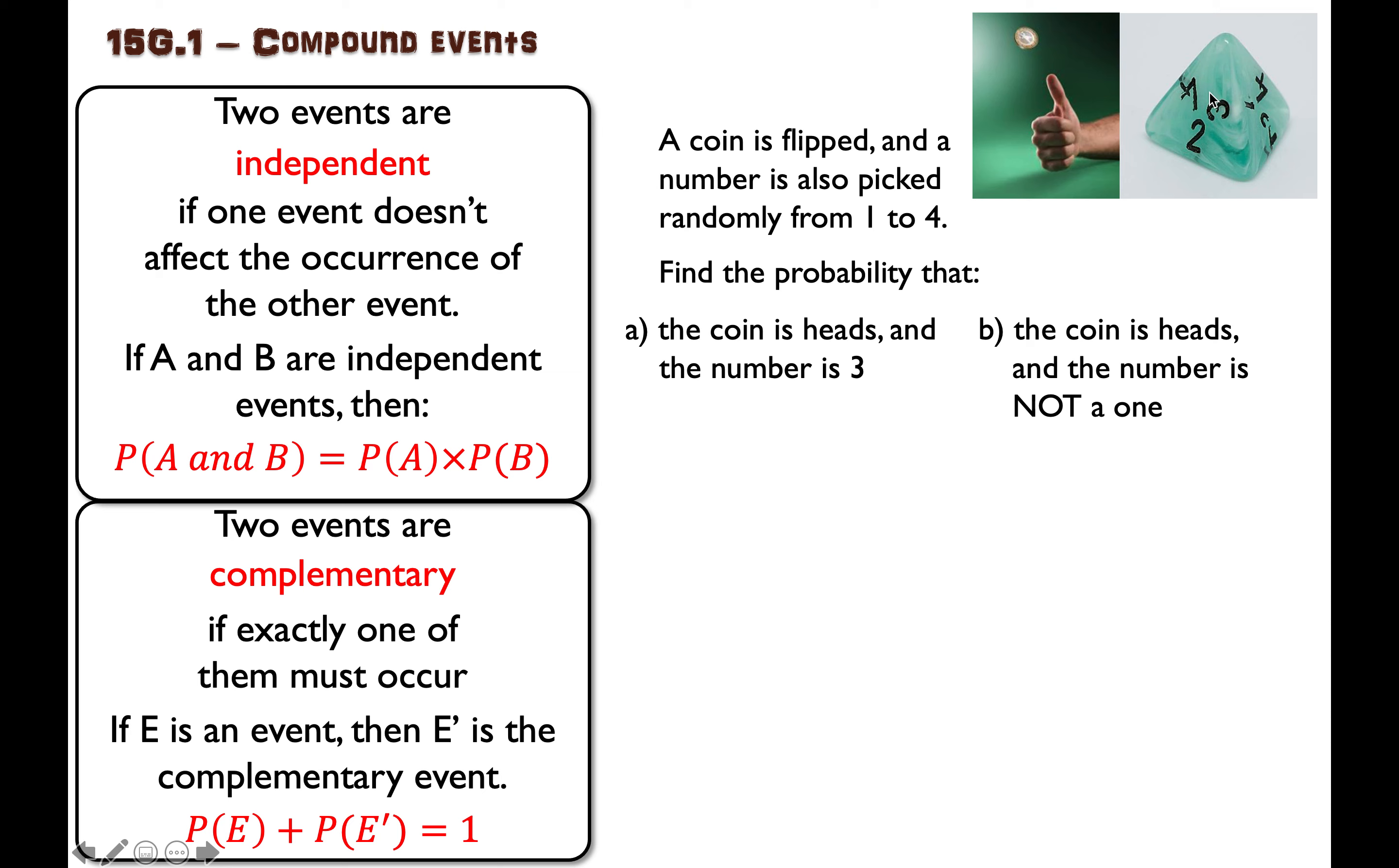If you roll a die and this one seems to have four sides on it, maybe my event is getting a one. The complementary event is getting not a one. Chance of getting a one is one in four. Chance of not getting a one is three in four.